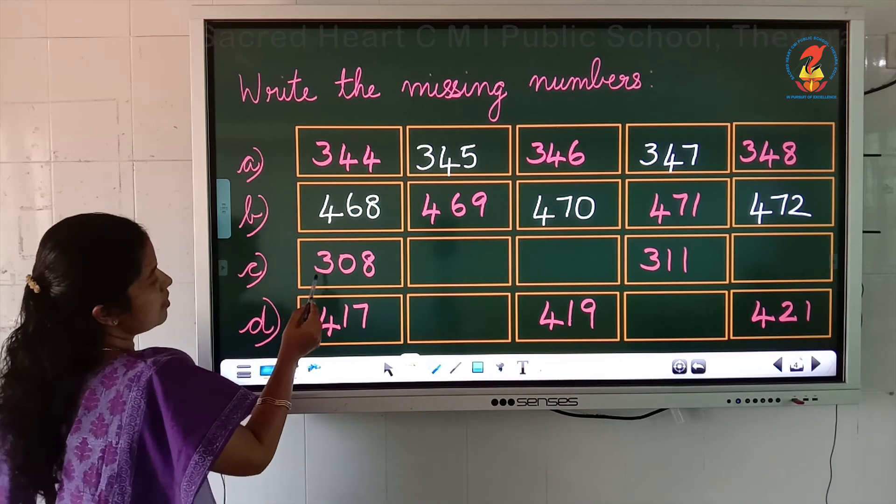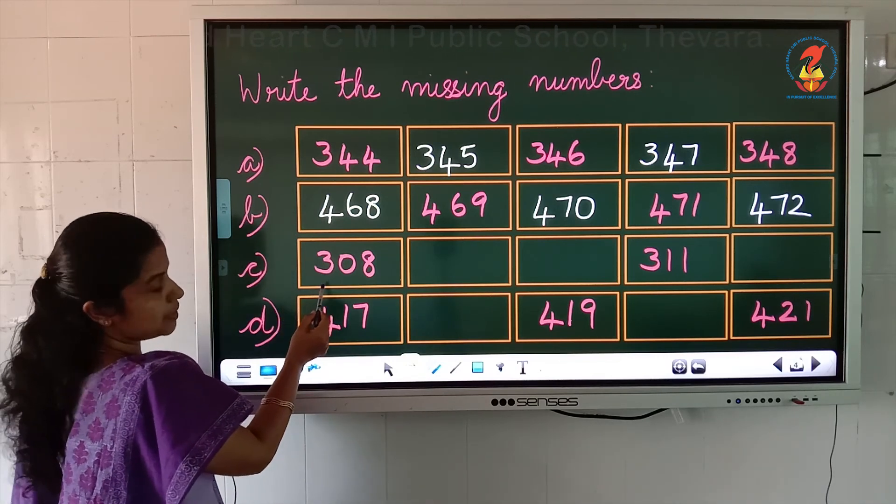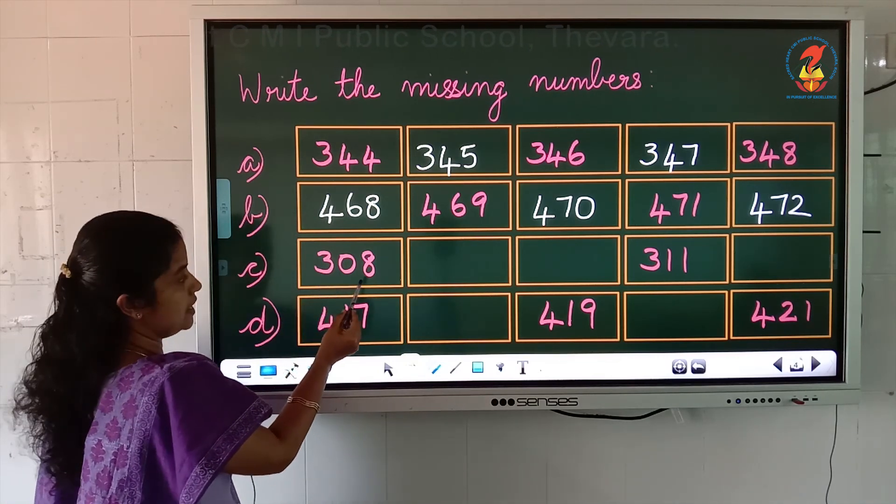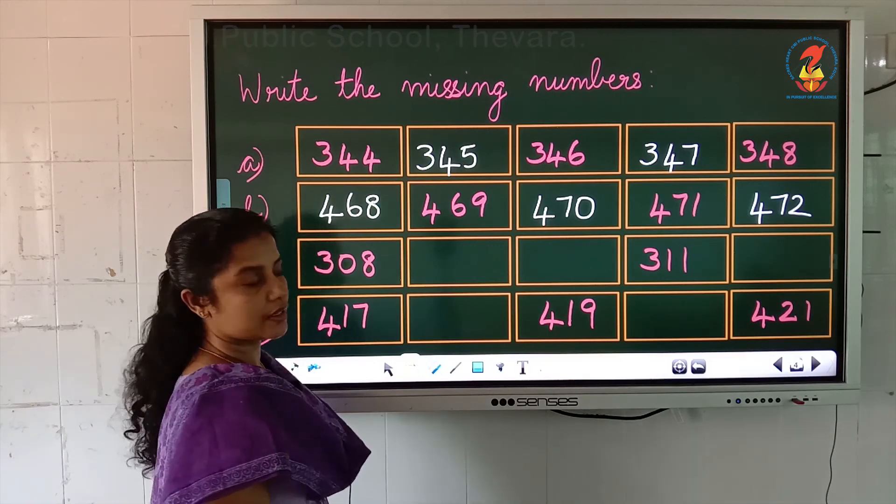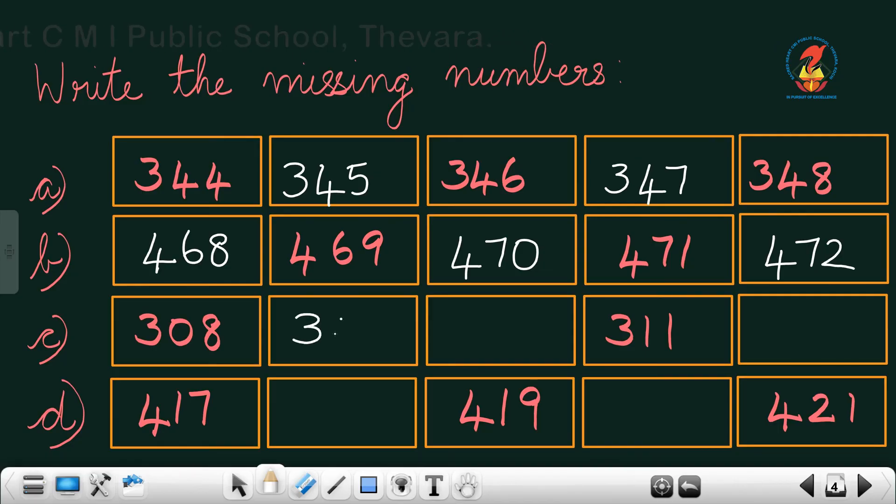Now the next question. What is written in the first box? 308. What comes after 308? 309. What comes after 309? 310. The next number is written here, 311. After 311, it is 312.